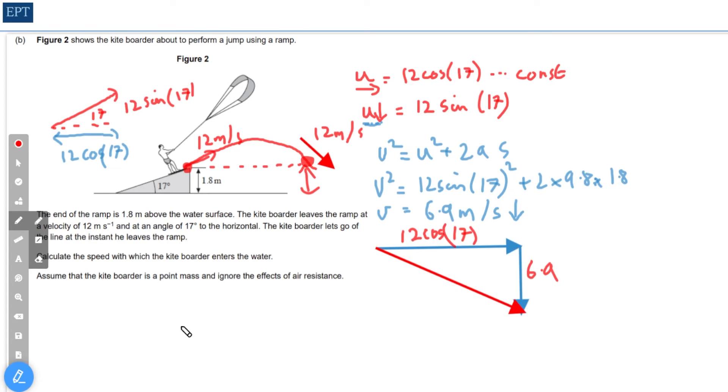Now it's just Pythagorean theorem. The resultant or the hypotenuse squared is going to be the other two squared, so 12 cosine 17 all squared plus 6.9 squared. That will give us h squared is about 131.7 plus 47.6.